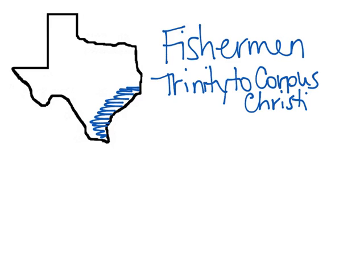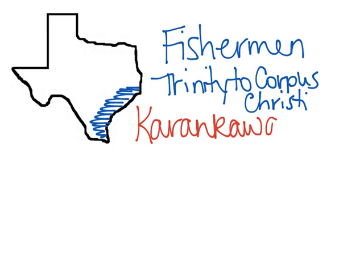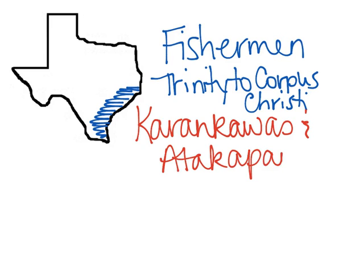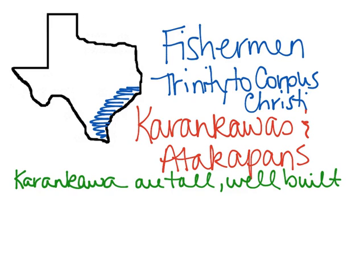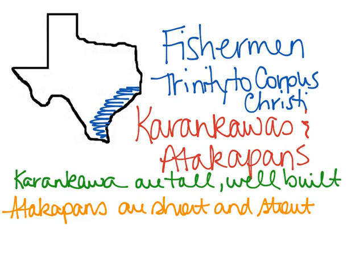The two groups in the fisherman tribes are the Karankawas and the Atacapans. The Karankawas are tall and well built — very tall and lean because of a diet that consists mostly of seafood. The Atacapans are short and stout. Most of their diet also comes from seafood like the Karankawa, but they're a little more inland and add more things to their diet as they search for different food sources.